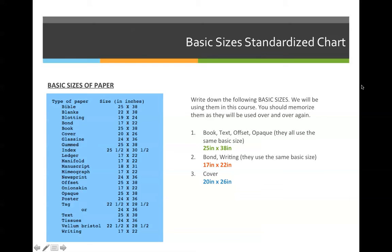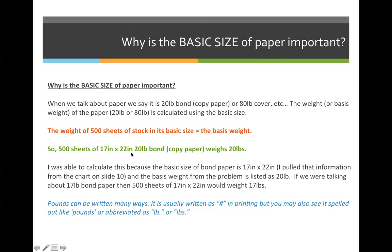So going back to our chart, since we decided 25 by 38 will be our example, let's say we were manufacturing 25 by 38 inch sheets of 80 pound gloss text. The way we would know it's 80 pound paper is that 500 sheets of 25 by 38 — because that's the basic size of 80 pound gloss text — would weigh 80 pounds. If we were weighing 100 pound gloss text, 500 sheets of 25 by 38 would weigh 100 pounds. Another example: 500 sheets of 17 by 22 inch 20 pound bond copy paper would weigh 20 pounds.